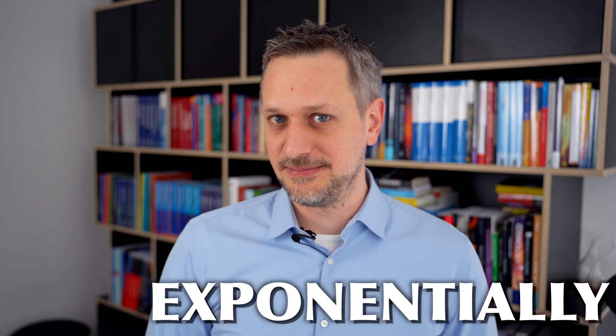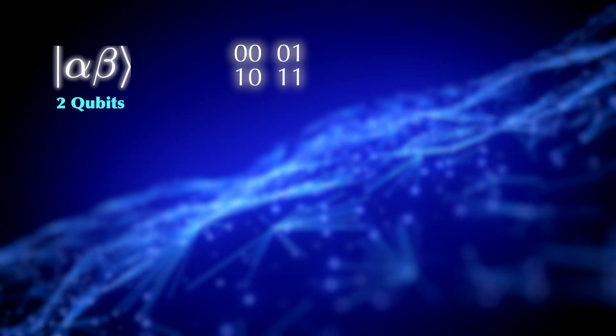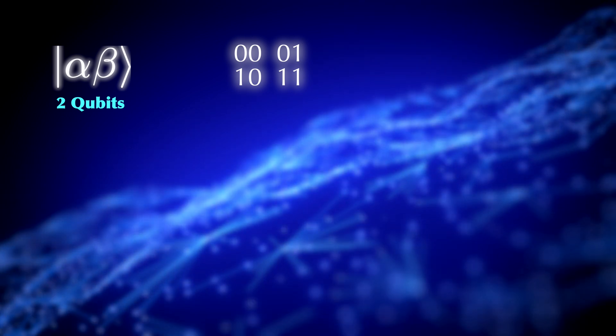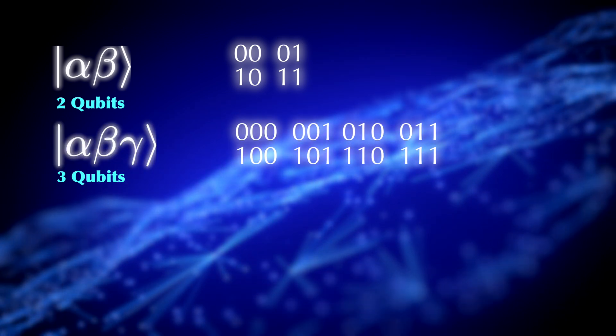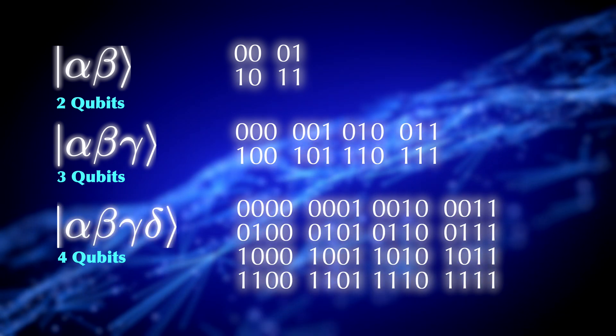It scales exponentially. This means that if you have two qubits, you can store four bits of information. Eight bits with three qubits and 16 bits with four qubits, etc.